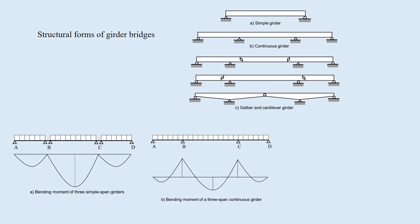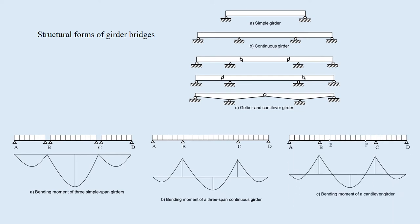C: Gerber and cantilever girder. Hinges are installed in the continuous girder. Due to these hinges, the Gerber bridge is a determinate structure and the bending moment is zero at the hinge points.